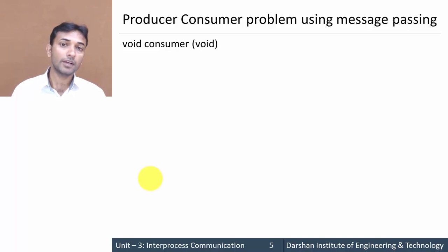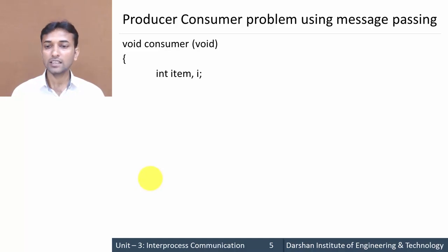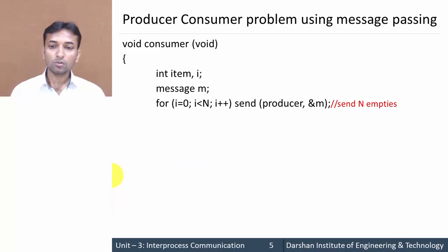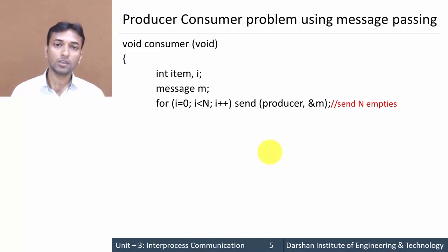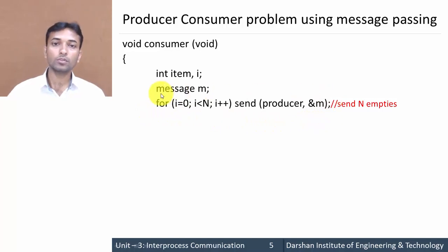Next, 'void consumer(void)' — whenever the consumer wants to consume some data from the producer, this function is called. We declare integer variables 'item' and 'i', and 'message m'. Then a for loop: for(i = 0; i < N; i++) — N times the consumer sends an empty slot to the producer so that the producer can send data into that empty slot and return it to the consumer.